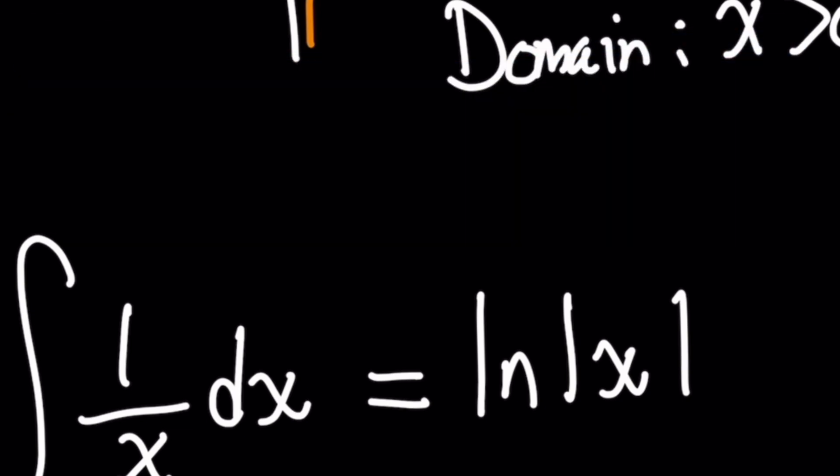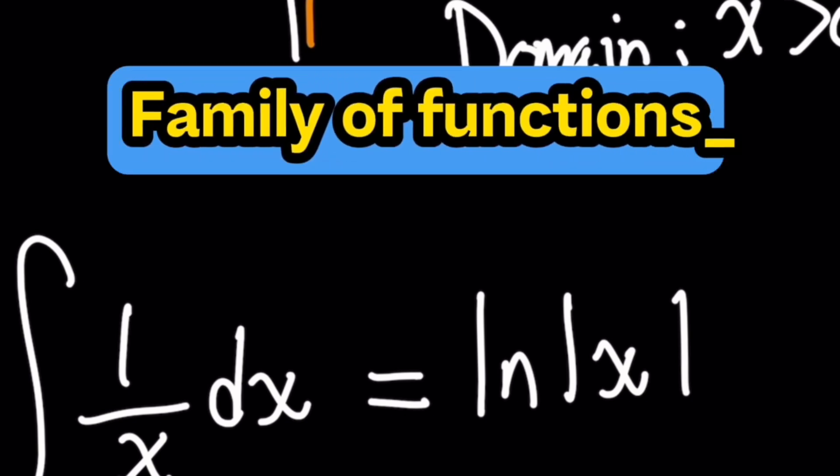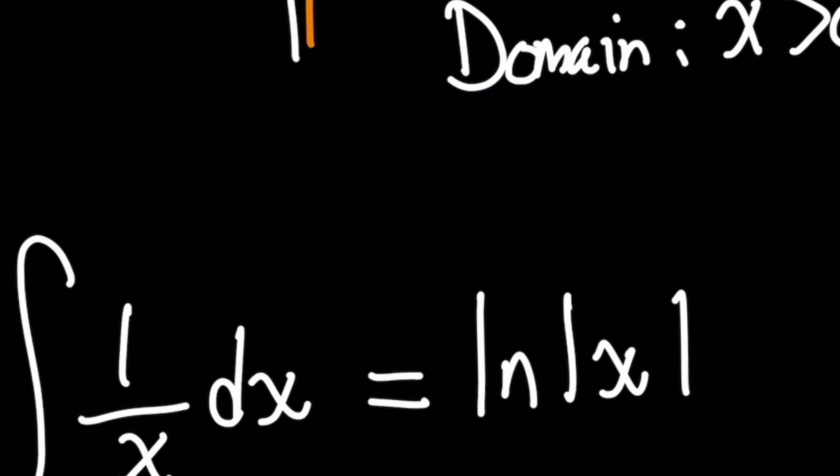What this means is that when you integrate, you have to take into account that integration actually gives you a family of functions as a result. So we can't make an assumption that the original parent function that we have a derivative or differential of didn't have a constant at the end. So make sure to always add that.